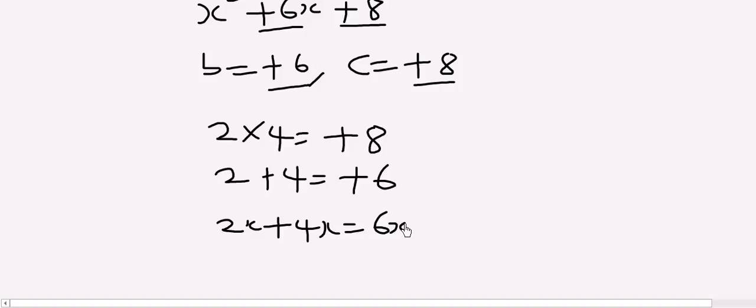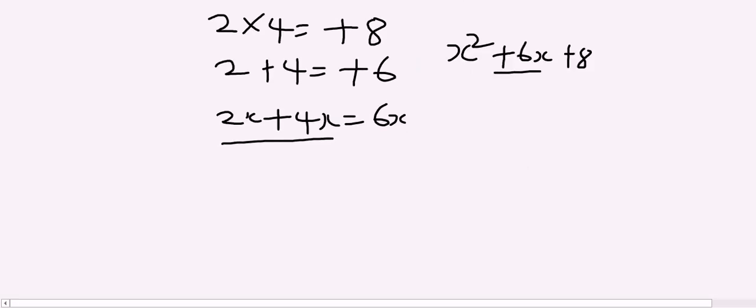Looking at our expression x² + 6x + 8, we see that we can replace 6x here with 2x + 4x. So I will simply have x² + 2x + 4x, and I still have my plus 8 there.